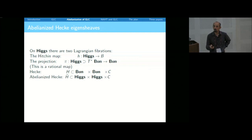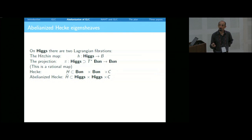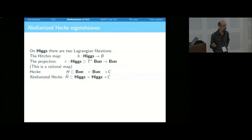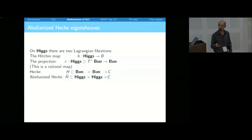The last thing I explained last time was that the Hecke operator H from Bun cross Bun cross C has an abelianized version H-tilde, where instead of Bun you take Higgs. Instead of a pair of bundles that are a modification of each other at the given point, you take a pair of Higgs bundles where the underlying bundles are modified at the point and the Higgs fields are compatible via a commutative diagram. The fiber of the Hecke correspondence over a given point of Bun cross C, instead of being a Grassmannian, becomes a finite set of subspaces invariant under the Higgs field — giving a finite version of the theory.